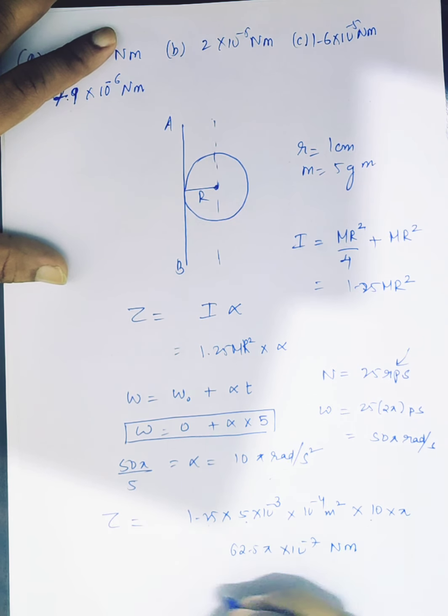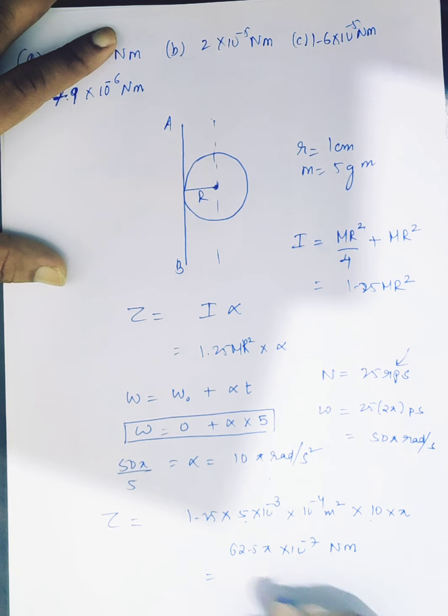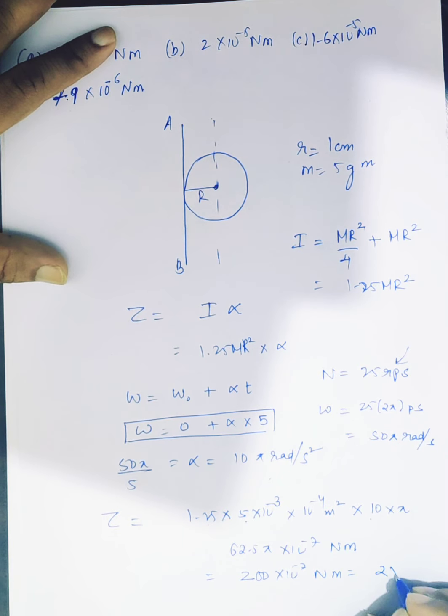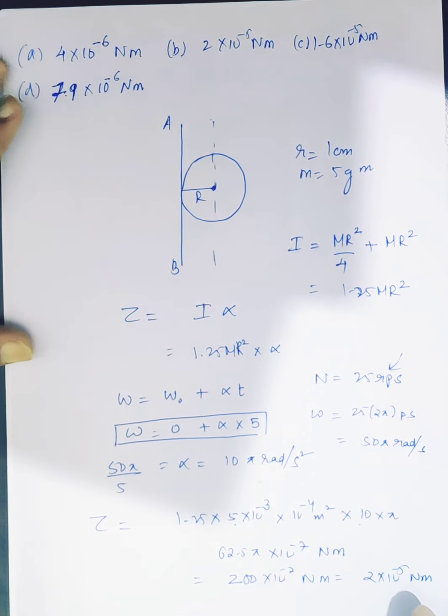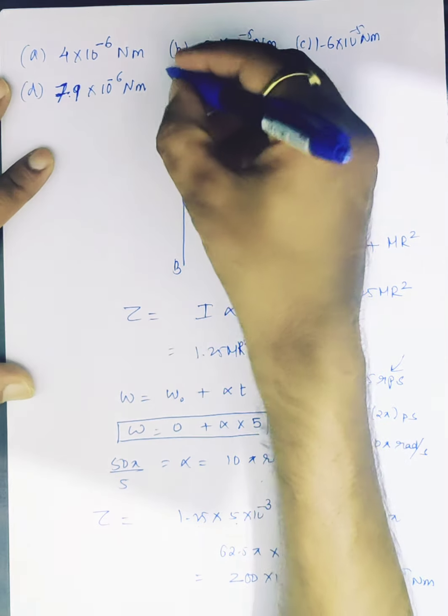Newton meter. And 62.5 into 3.14 is very close to 200, 10 to the power minus 7 newton meter. So we can write 2 into 10 power minus 5 newton meter, so the answer is B.